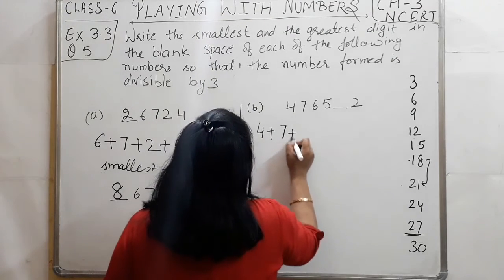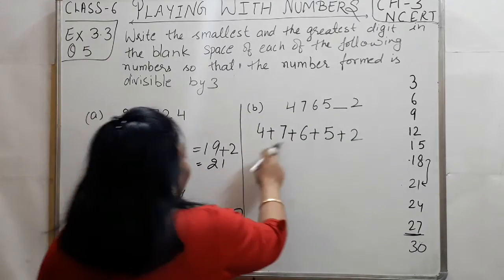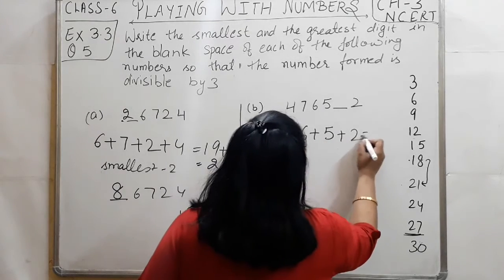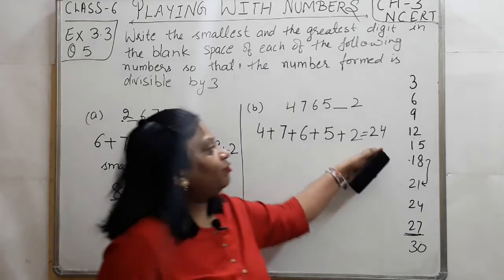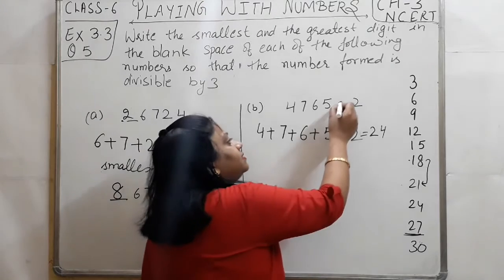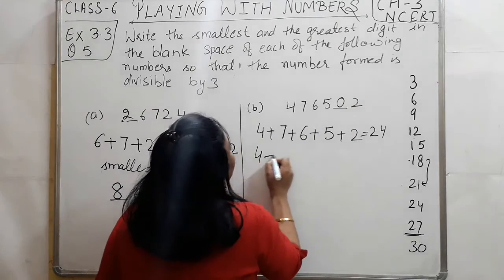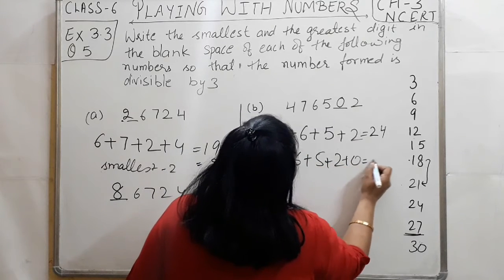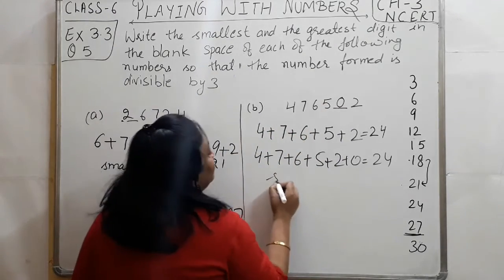Now for the second part: adding the digits 4 + 7 + 6 + 5 + 2 — that gives 4+7=11, 11+6=17, 17+5=22... wait, 17+2=19, 19+5=24. The sum is already 24, which is already divisible by 3. So if I add 0 to it, it makes no difference — 24 + 0 = 24. Therefore, the smallest digit is 0.